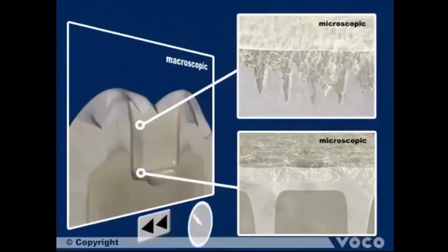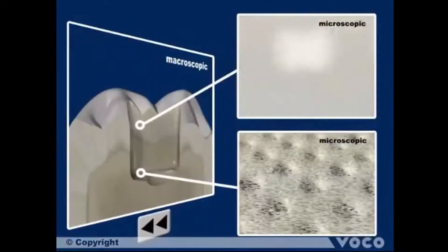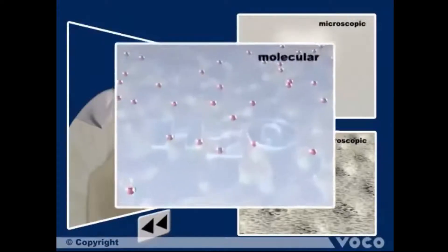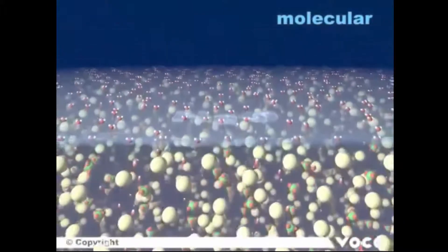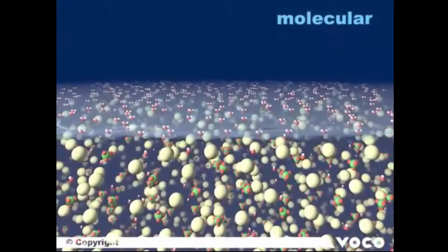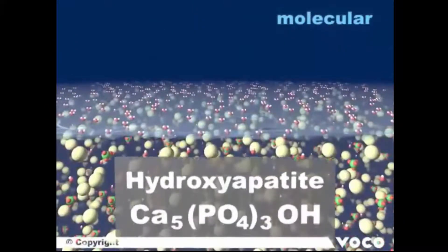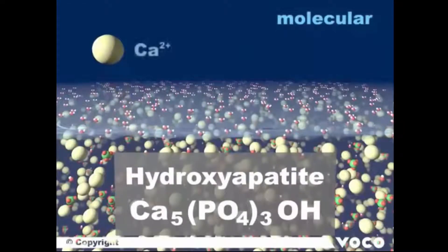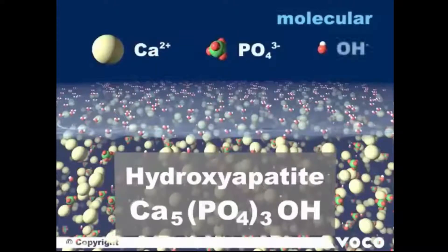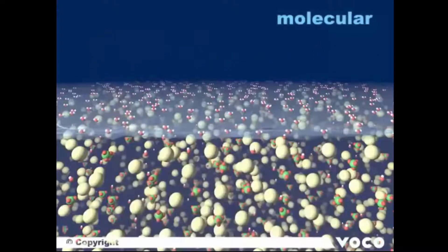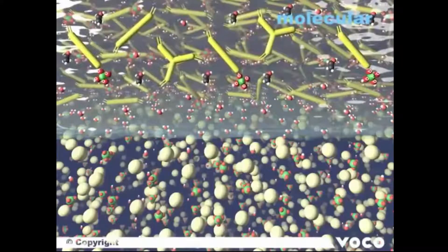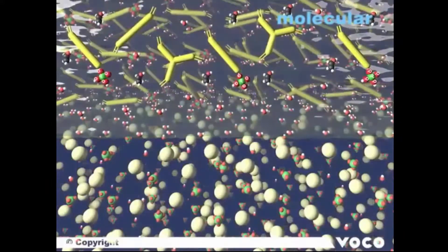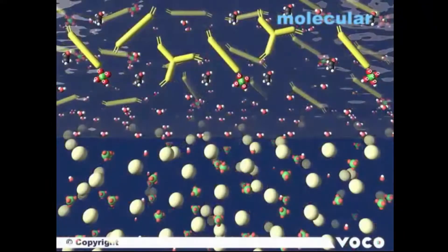By looking again at the process on the molecular level, we will understand how the chemical mechanism of the connection between tooth substance and composite material works. Due to the preparation, there is a thin water layer on the tooth. Hydroxyapatite, the main component of tooth that consists of calcium and phosphate as well as hydroxy ions. The adhesive is applied. For reasons of better clarity, only the first level is shown in the next step. Here, all components from the adhesive liquid are depicted.